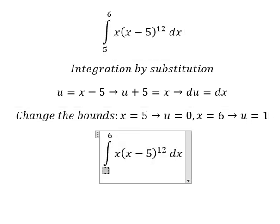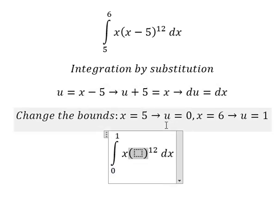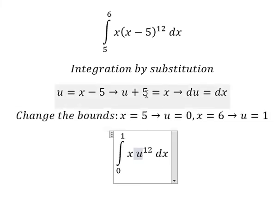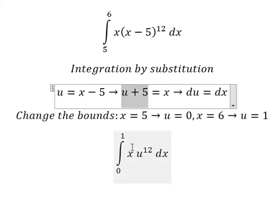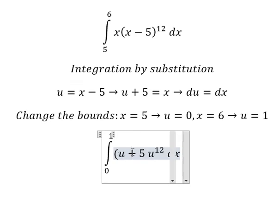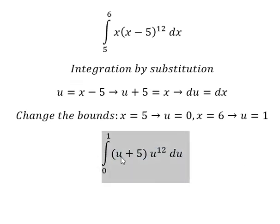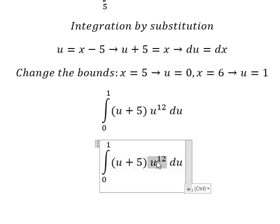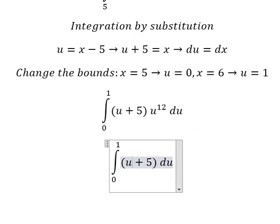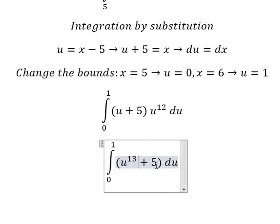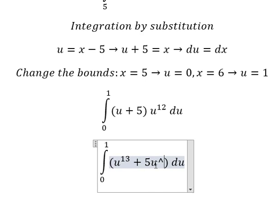So the lower bound changes from 5 to 0, and the upper bound from 6 to 1. We replace x minus 5 with u and dx with du. After multiplying u with u plus 5, we get u to the power of 13 plus 5u to the power of 12.